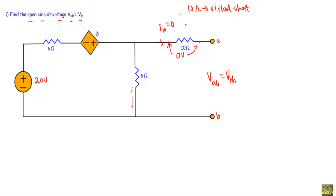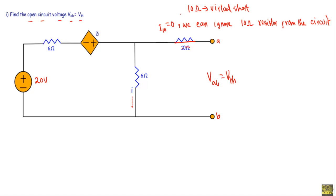Since the current through the 10 ohm resistor i10 is equal to zero, we can ignore the 10 ohm resistor from the circuit. As this 10 ohm is acting like a short circuit, we will get Vab across the two terminals. Vab will be the voltage across the 6 ohm resistor.